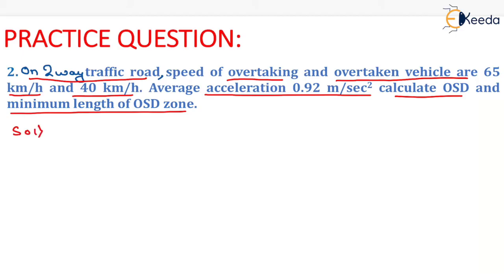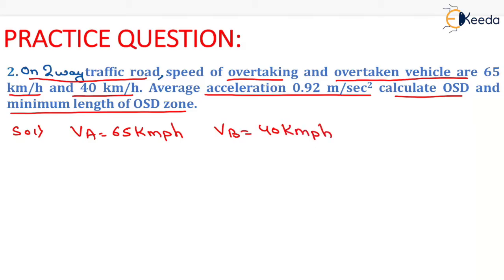We know that VA equals 65 km per hour and VB equals 40 km per hour, both given in the question. The acceleration (a) is 0.92 m per second square, and the reaction time TR equals 2 seconds as per the Indian Road Congress.